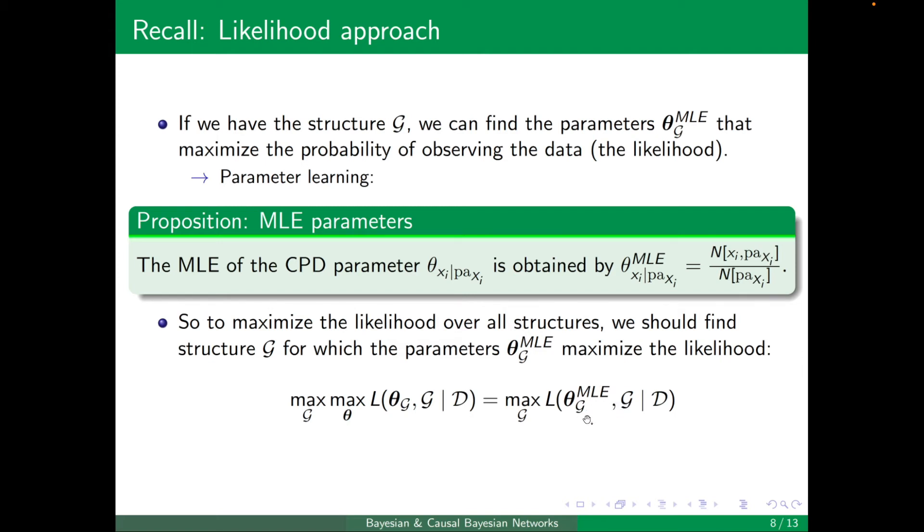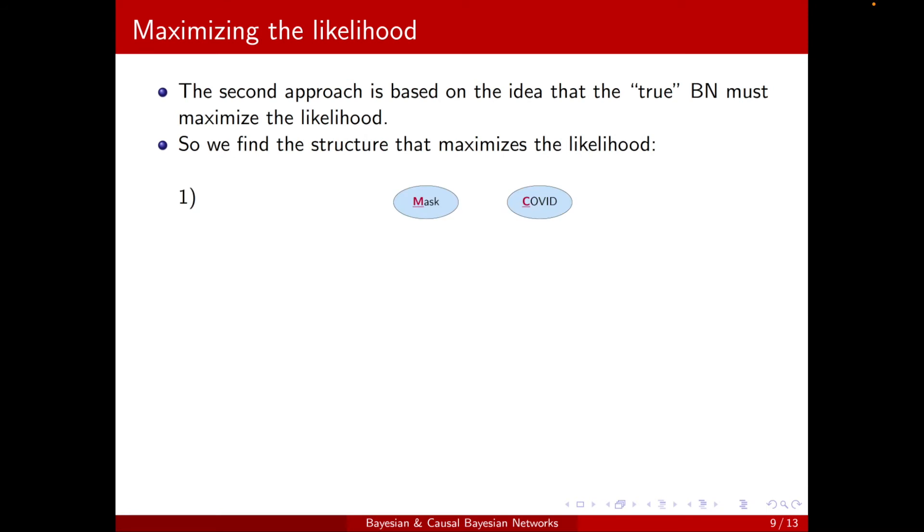Okay? So we will do this. Here in our example, we, again, we need an algorithm to do this systematically. But just to give you the idea, we will calculate the likelihood for each of the three structures. So the first one, they are independent. And the likelihood of the CPDs, general CPDs, and this graph G, well, it's just this term here. So we have the parameters theta of C and theta of M. There's no conditional parameter.